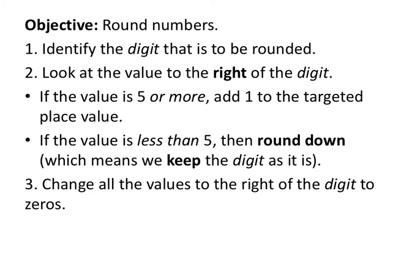Our first objective: rounding numbers. You have to find out what digit you're rounding to. They may say something like you're going to round to the nearest hundred or the nearest thousand, maybe something bigger like millions or ten millions. They'll let us know, of course. But you have to identify what digit you're looking at in that specific place value.